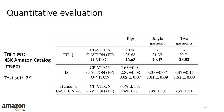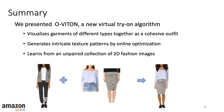We evaluated our method using perceptual metrics and performed a human study. We also did an ablation study for the appearance refinement stage by comparing to the feed-forward only approach. To summarize, we present Au Vuitton, a new virtual try-on algorithm. It visualizes garments of different types together as a cohesive outfit, generates intricate texture patterns by online optimization, and learns from an unpaired collection of 2D fashion images.